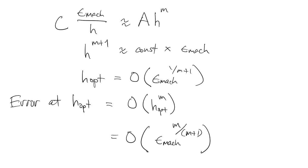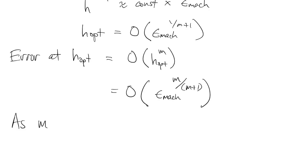Now the optimal truncation error is h-opt to the mth power. So we get epsilon to the m over m plus one. As m increases, this exponent of machine epsilon gets closer to one, which means we get a larger and larger fraction of the digits correct.